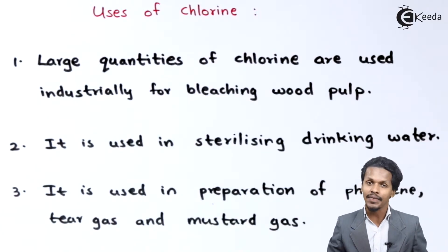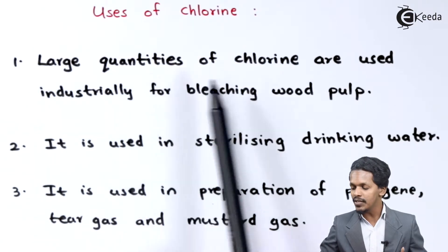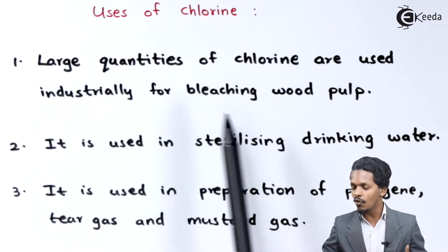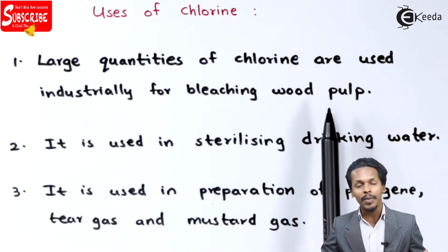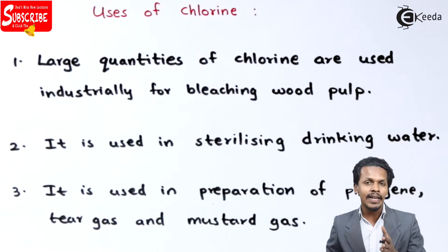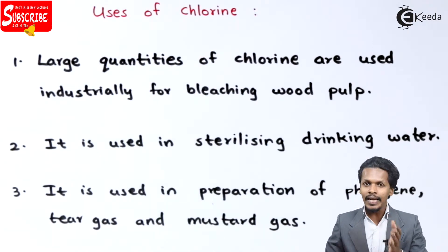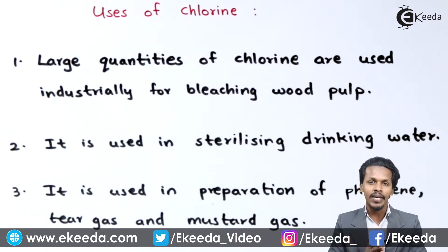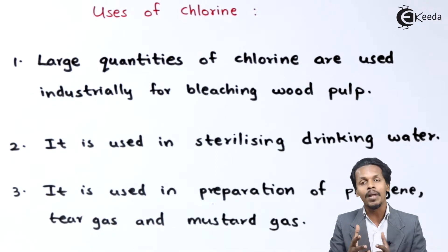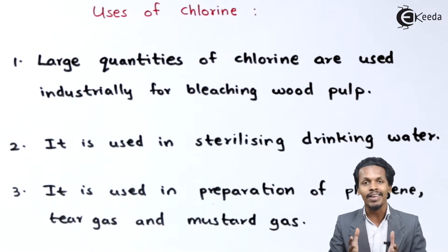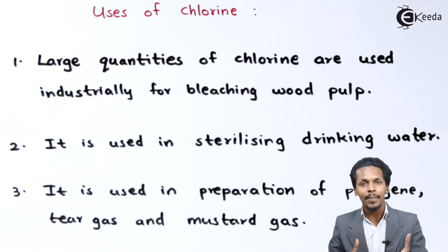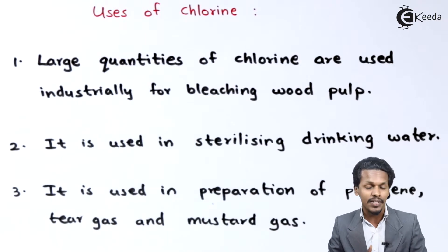The first point is that large quantities of chlorine are used industrially for bleaching wood pulp. Wood pulp is used to make papers, and chlorine also has wide applications in the preparation of rayons.